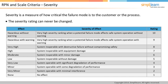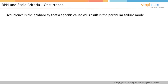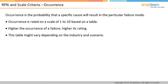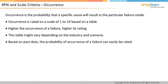Occurrence is the probability that a specific cause will result in a particular failure mode, rated on a scale of 1 to 10. Higher the occurrence of a failure, higher is its rating, though the table may vary depending on industry and scenario. Sometimes the project team can use past data to rate the probability of occurrence of a failure.